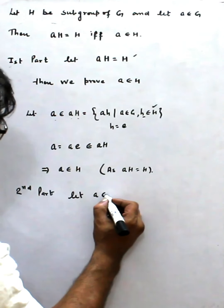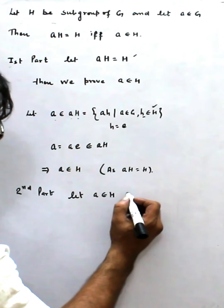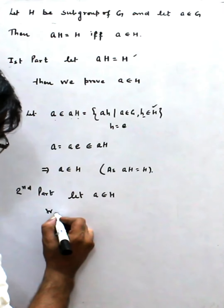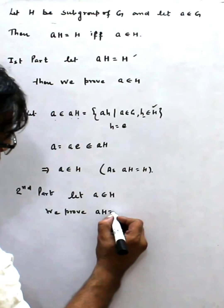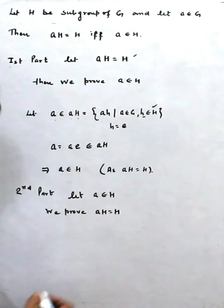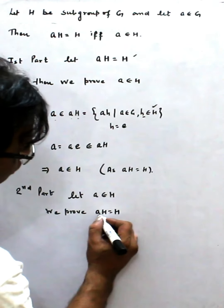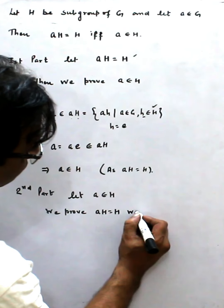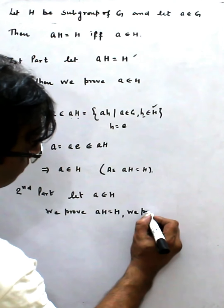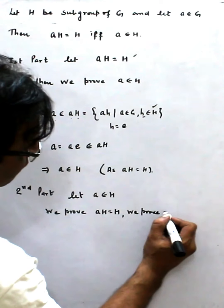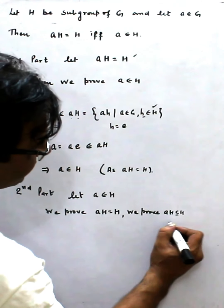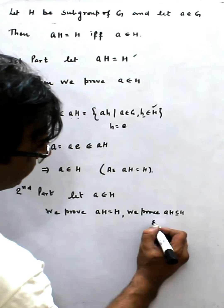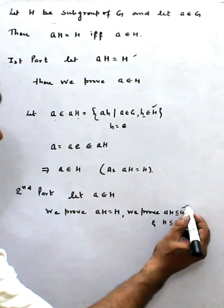Now for the second part: to prove AH is equal to H, we prove AH is contained in H, and H is contained in AH.